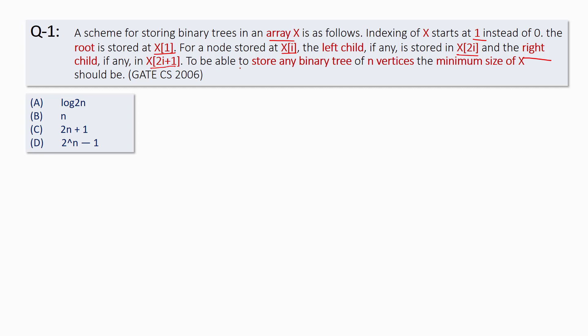We have to find out the minimum size of array x that will be able to store any binary tree of n vertices, satisfying the given storage property. This way of storing elements of a binary tree in an array is similar to how we store elements in a max or min heap.